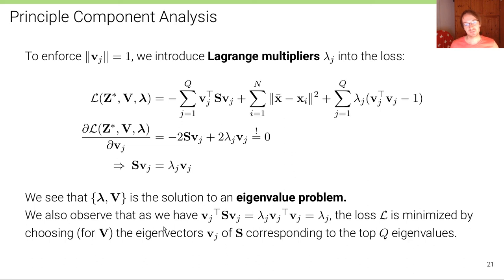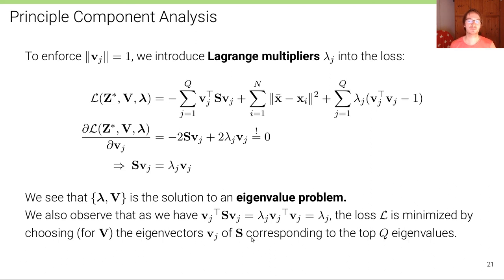We observe that V_j^T S V_j equals Lambda_j V_j^T V_j = Lambda_j, since the basis vectors are normalized. This loss is minimized by choosing for the basis matrix V the eigenvectors V_j of S that correspond to the Q largest eigenvalues. So we sort the eigenvalues from largest to smallest — the largest explains most of the data — take the top Q eigenvectors, and stack them as columns into the matrix V.